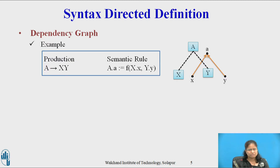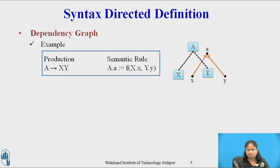Example: suppose A.a = F(x.x, y.y) is a semantic rule for the production A derives x y. This rule defines a synthesized attribute A.a that depends on the attributes x.x and y.y. If this production is used in the parse tree, then there will be three nodes A.a, x.x, and y.y in the dependency graph, with an edge to A.a from x.x since A.a depends on x.x, and an edge to A.a from y.y since A.a also depends on y.y.